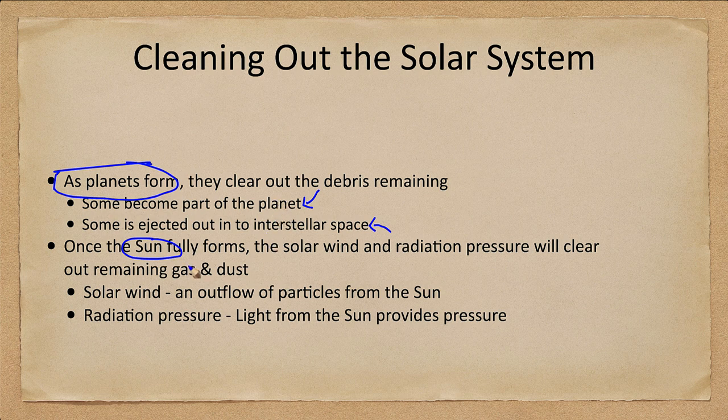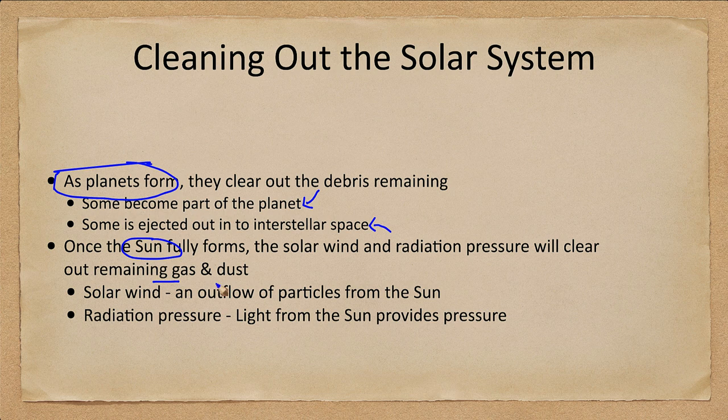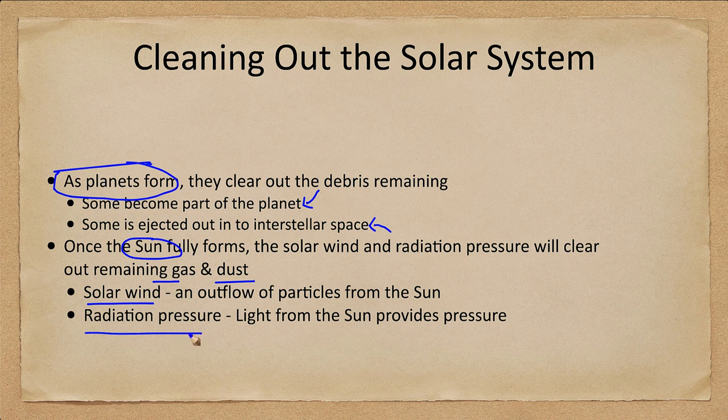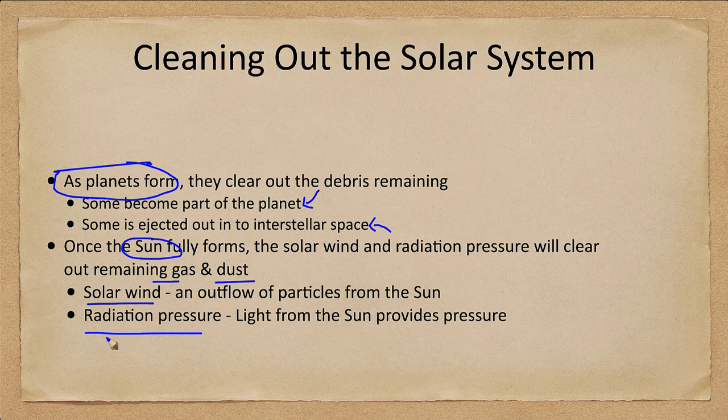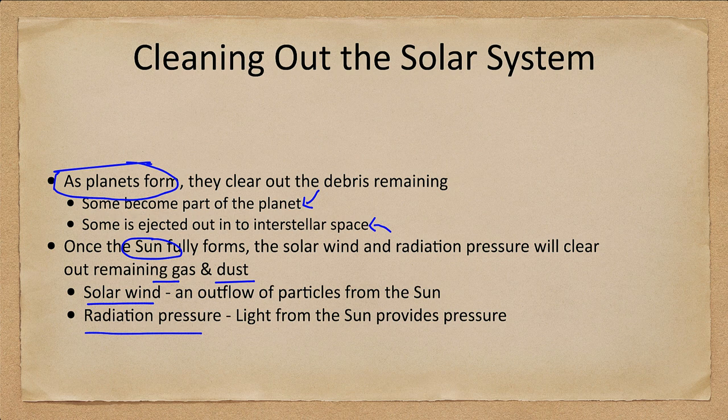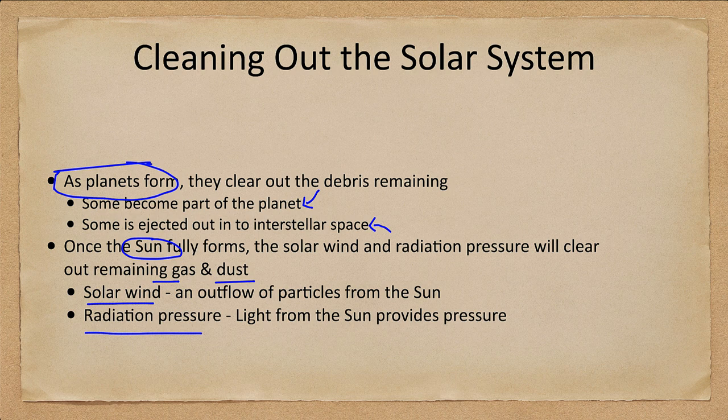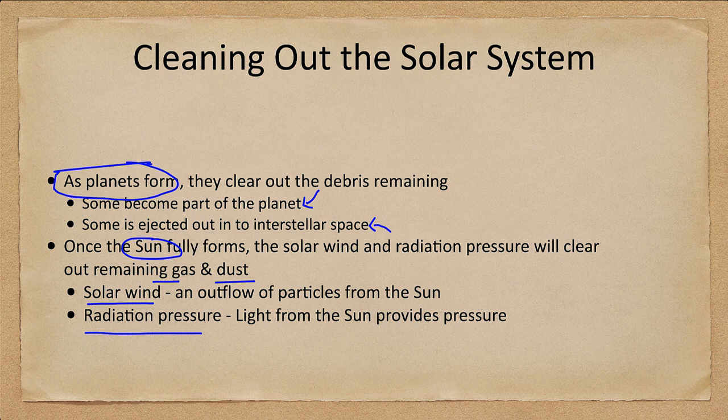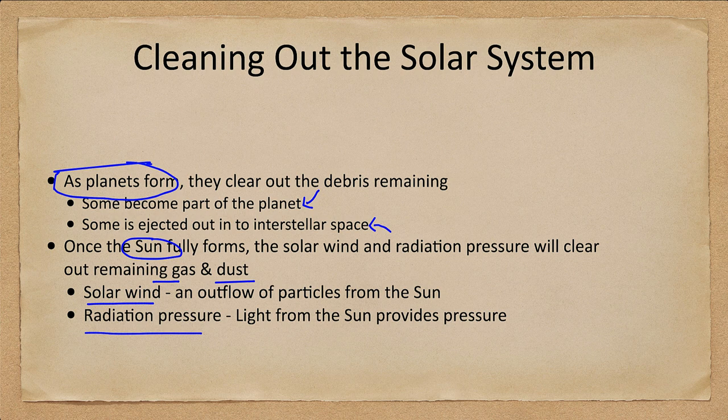The Sun is very good at clearing out the remaining gas and dust. The solar wind and radiation pressure will clear out the extra gas and dust material, eliminating that from the solar system. Solar wind is an outflow of particles that will push against material, and the radiation pressure is the light from the Sun which will provide a pressure as well. This will have no effect on any large objects, even things the size of a pebble will not be significantly affected, but individual gas and dust particles will and will get pushed away and cleaned out of our solar system.